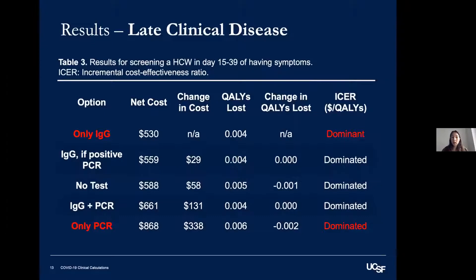Things changed significantly when screening healthcare workers in late clinical disease — those who started having symptoms more than 15 days ago. In this case, PCR testing was no longer dominant; in fact, it was even worse than doing nothing at all. This is because positive PCR test results are interpreted as false positives at this point, and studies suggest it's highly unlikely for someone to still have viable virus two weeks after infection. When a truly susceptible individual receives a false positive PCR result suggesting recovered status, they end up taking more risks. But with no testing, everyone acts as if they're susceptible and remains more cautious.